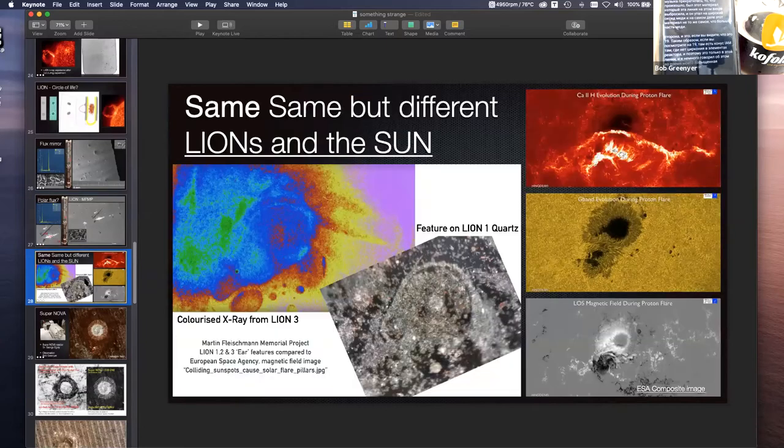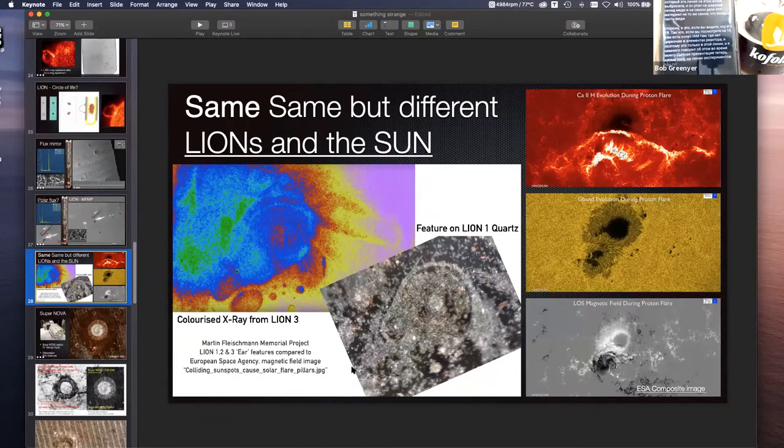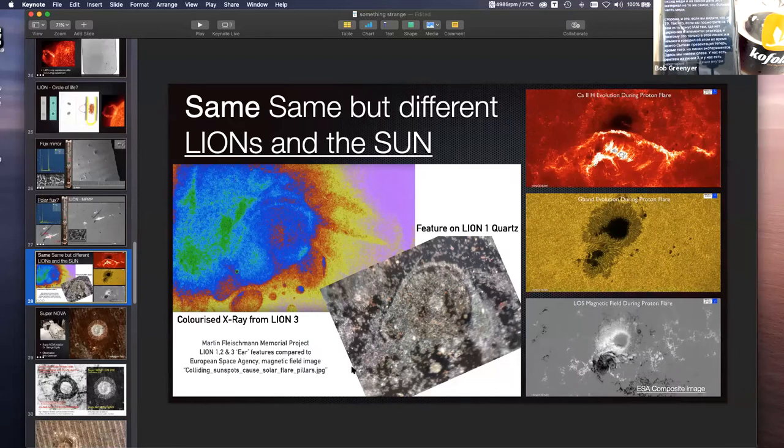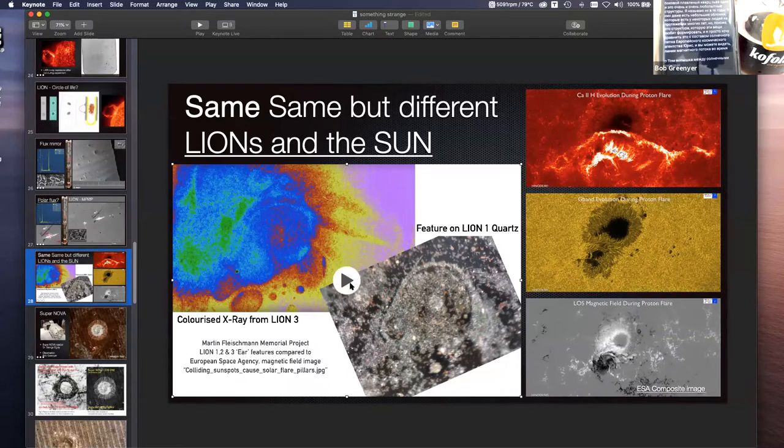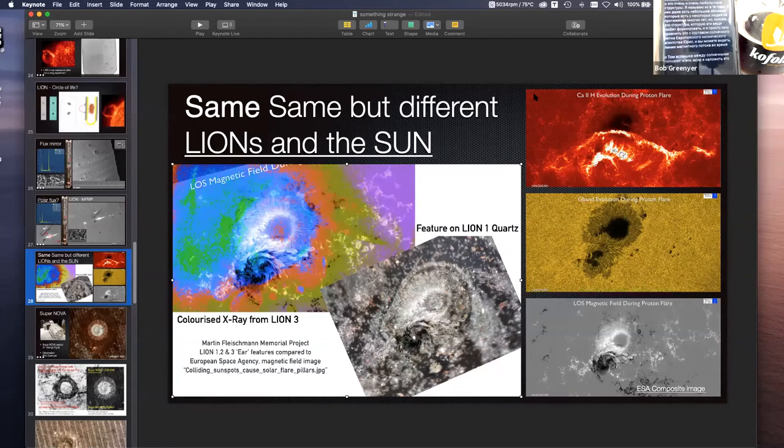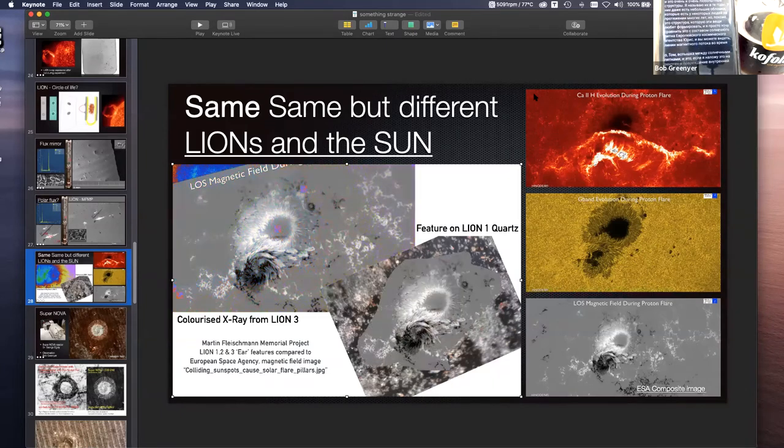Furthermore, on the lion experiments, here we have, on the left, we have an X-ray from lion 3. And we have some damage to the inside fused quartz of lion 1. And these are very, very curious structures. I call them the ears, they even have the little dangly bit that some people have on the ears. But it seems to be a structure that these things like to form. And I just want to compare that to the European Space Agency composite of a sunspot. And you can see the magnetic flux lines during a proton flare between two sunspots. And if I overlay that onto the X-ray and the damage to the inside of the quartz, it is an absolute dead ringer match.